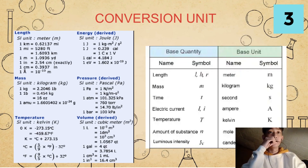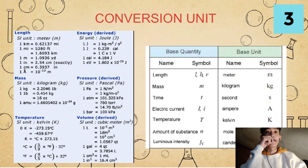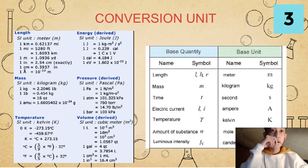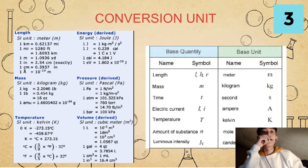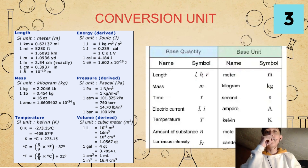For our conversion unit, we have base quantities. In every base quantity, there is a symbol. For length, it has a symbol. Mass — the symbol of mass is small letter M. Time is small letter T. Electric current is small letter I, or A. Temperature is big letter T. Amount of substance is small letter N. And luminous intensity looks like a IV.